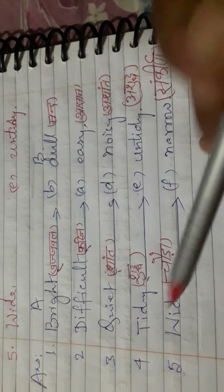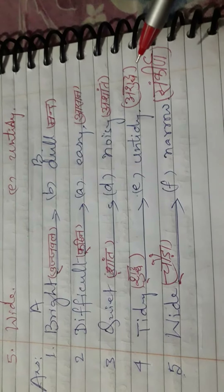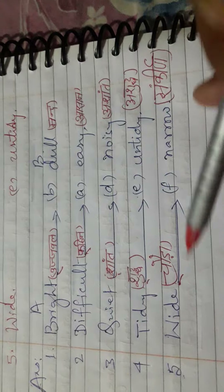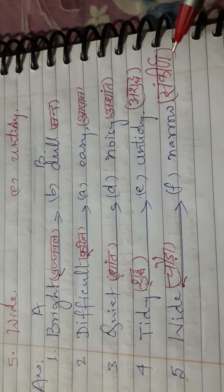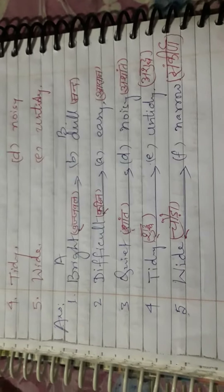For your sake of simplicity, the Hindi meaning has also been mentioned here. Bright means Ujjwal, dull means Manth, difficult means Kathin, easy means Asan, quiet means Shant, noisy means Asanth ya Kolahal, tidy means Shudd, untidy means Ashudd, wide means Chauda, and narrow means Sankhin. Must note it down and get it checked.